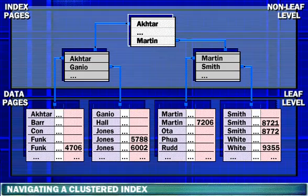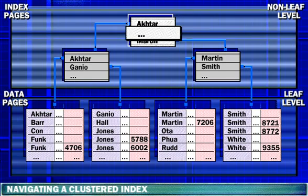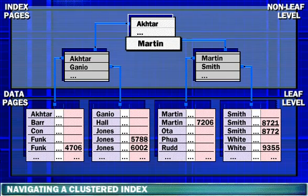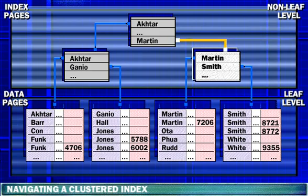SQL Server starts at the root page. It evaluates whether Rudd is greater than or equal to the key value Akhtar. The comparison evaluates to true and SQL Server moves to the next key value. SQL Server evaluates whether Rudd is greater than or equal to the key value Martin. The comparison evaluates to true and, as it is the last key value on the page, SQL Server moves to the page at the next level to which the key value Martin points.